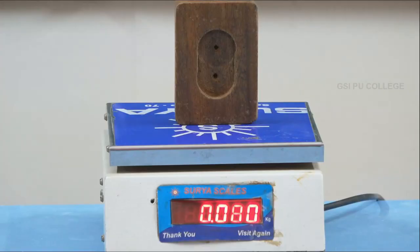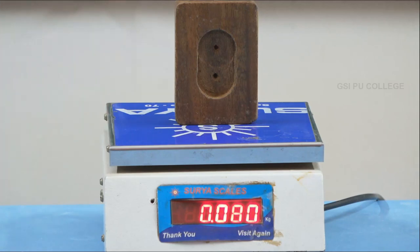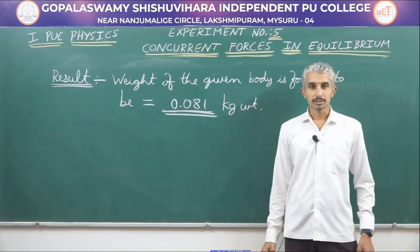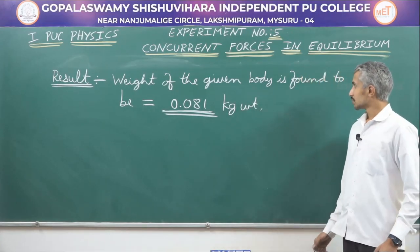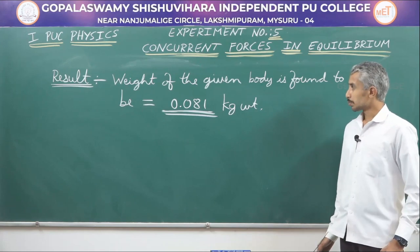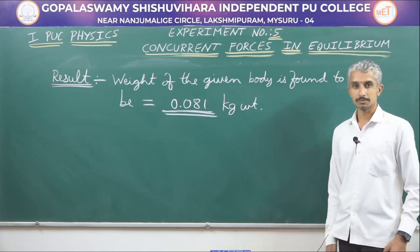We can verify the experiment using a digital weighing machine. It is showing 0.080 kg, confirming our result is correct. We have completed the experiment successfully. The result: the weight of the given body is found to be 0.081 kg weight. That is all for this session. Thank you.